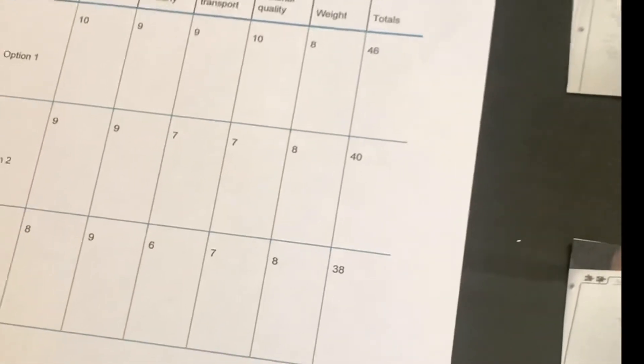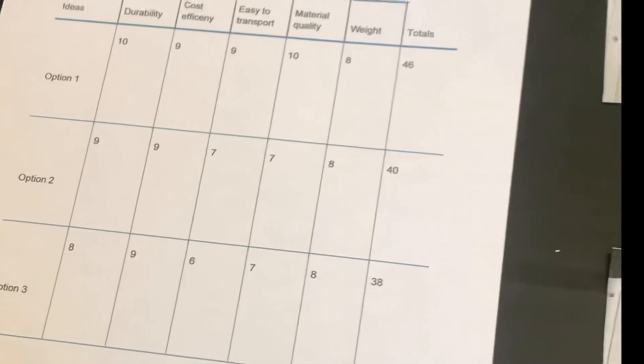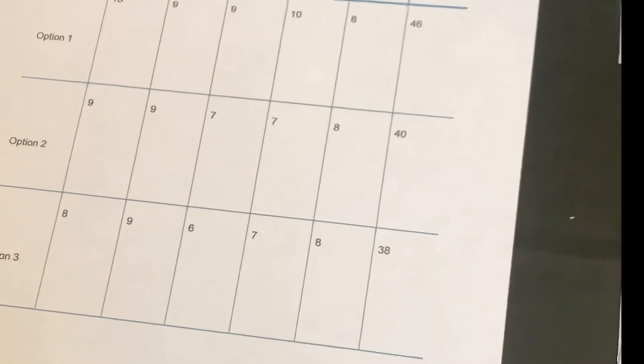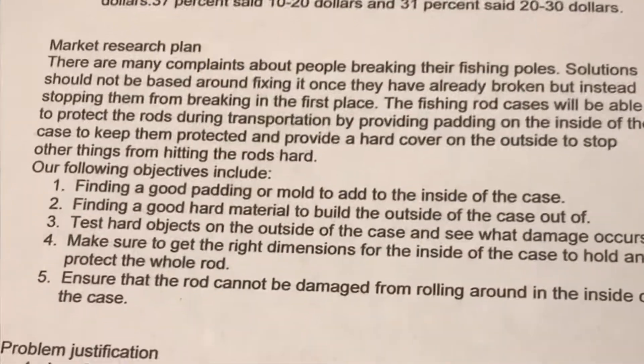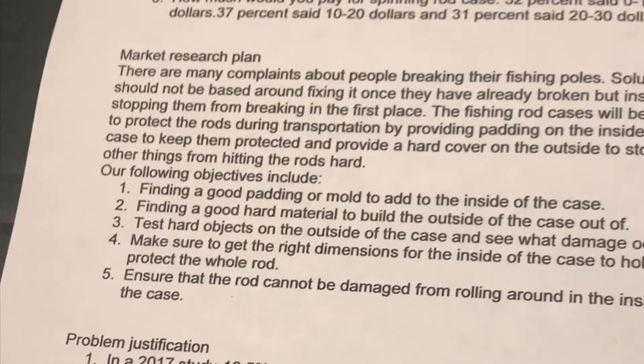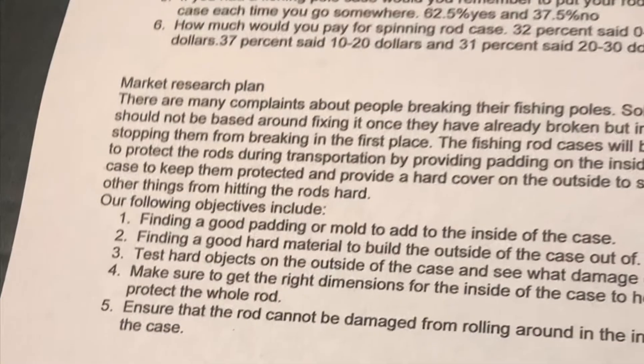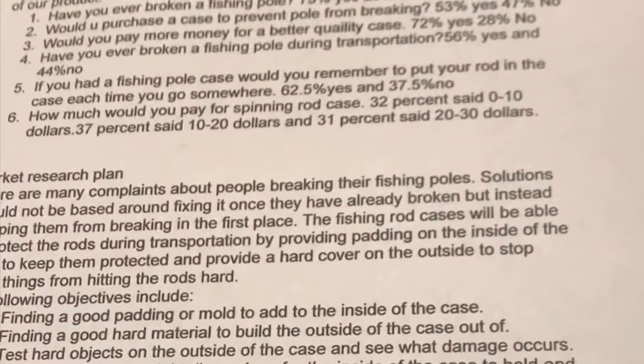All in all, it totaled up to the one that we went with being a 46 out of 50 in total versus the other two being a 40 and 38, so clearly we went with the first option, which is our pole protector. Okay, so for our survey analysis, we did some research to find out some information on what other people who fish think of our product. Our first question was, have you ever broken a fishing pole? 75% said yes.